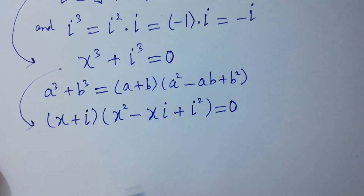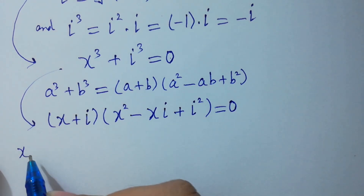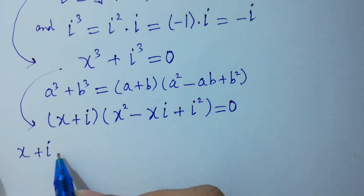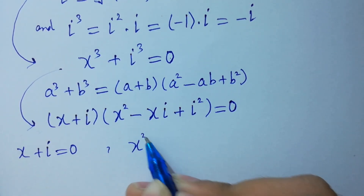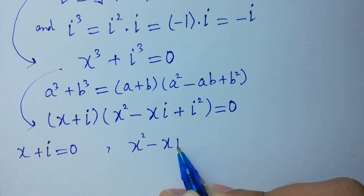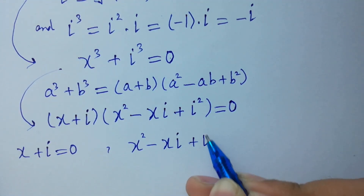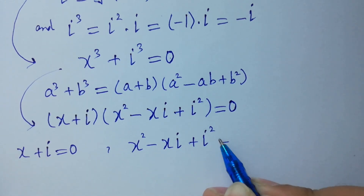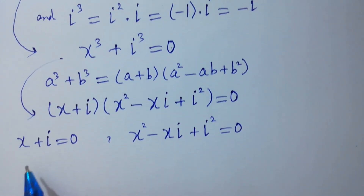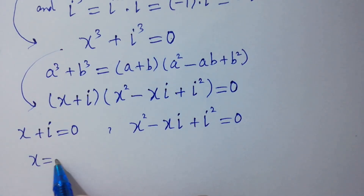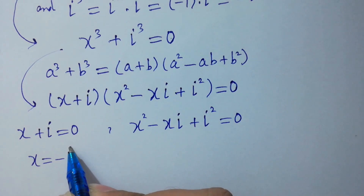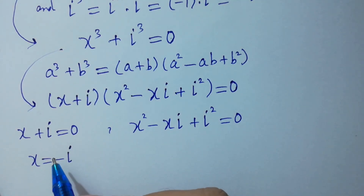So either x plus i equal to 0, or x square minus xi plus i square equal to 0. Since x plus i equal to 0, x will be equal to minus i.